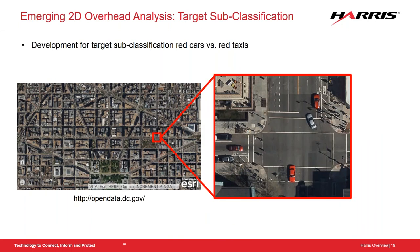The next area we're looking at with machine learning goes beyond just 2D overhead object detection. We can do individual object detection with a number of different classifiers, but the next step is getting into that target sub-classification level. Within a scene you can see a number of different types of vehicles — what if we want to discriminate, for example, red cars versus red taxis? This is the next area of analysis we're actively working on to enhance the machine learning and obtain even more accurate classifiers for that level of target sub-classification.